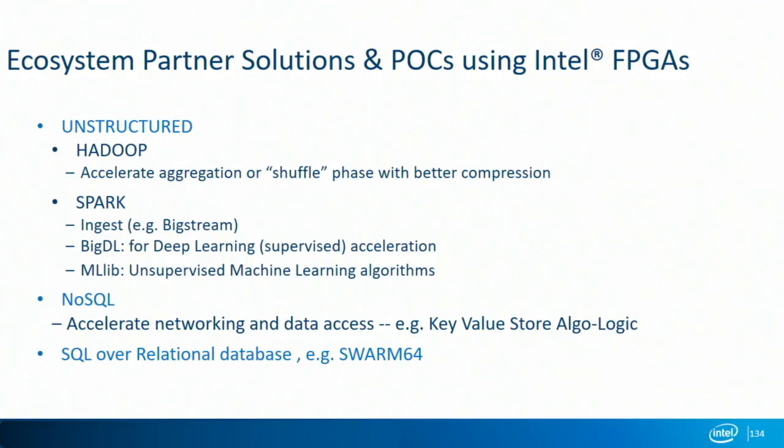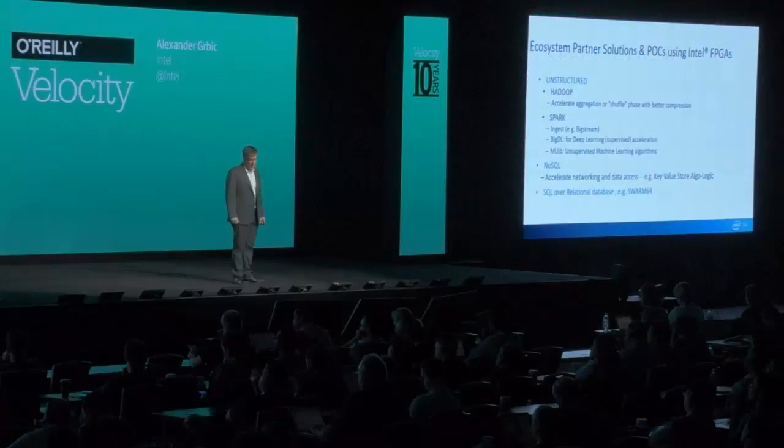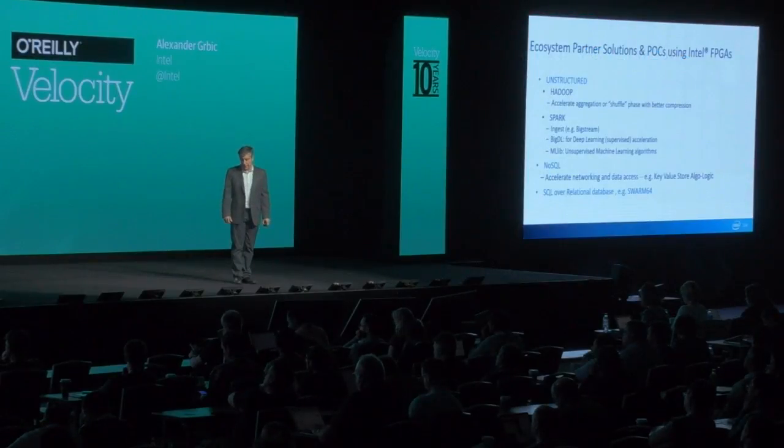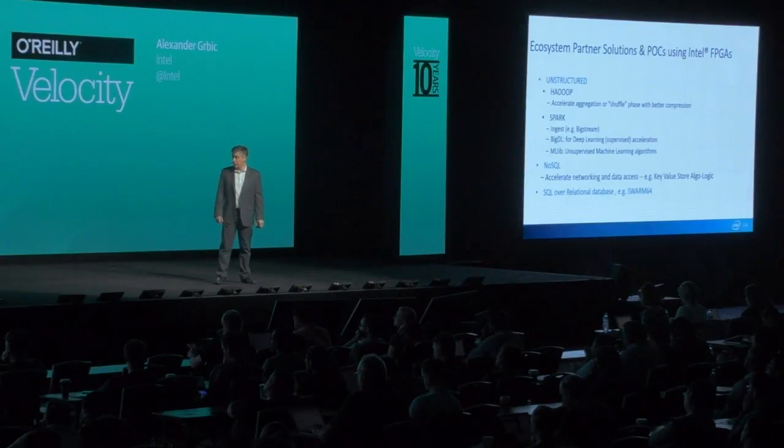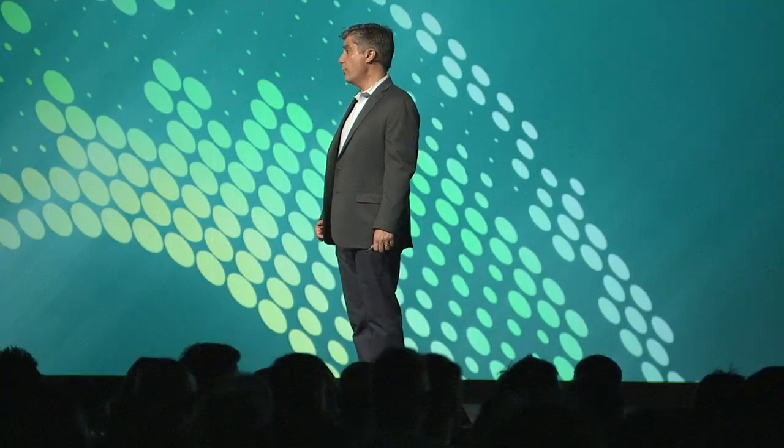For traditional SQL and relational databases, our partner Swarm64 has been able to implement algorithms that can support up to a million queries or updates per second for real-time Postgres SQL processing. That's about a 5x improvement over a non-accelerated version. Some initial impressive results — ones that we can demonstrate to you, talk to you more about, and integrate into your systems.